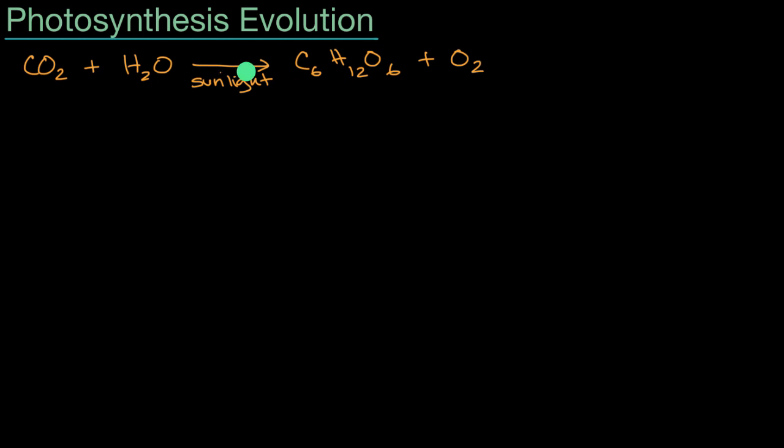Now, the way I've written it, this chemical equation right over here hasn't balanced. I have six carbons here, so let me put a six out front there. But now I have 12 hydrogens here. I only have two hydrogens here, so let me multiply this by six as well.